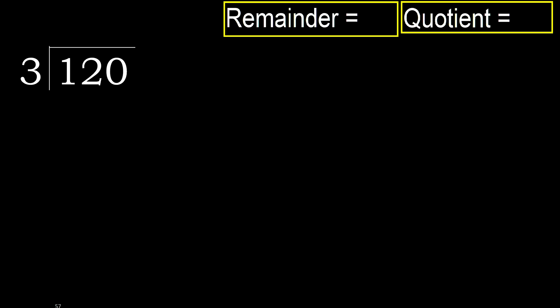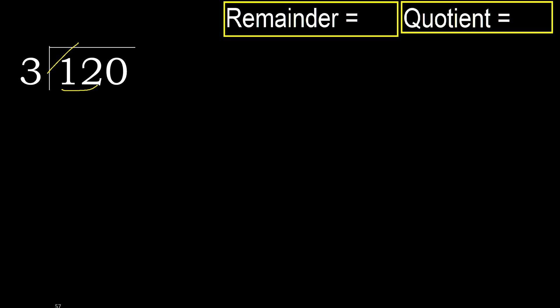120 divided by 3. 1 is less, therefore next. 12 is not less, therefore with 12: 3 multiplied by which number is nearest to 12, but not greater?